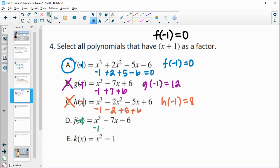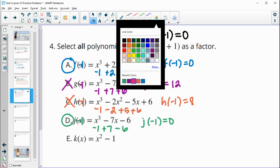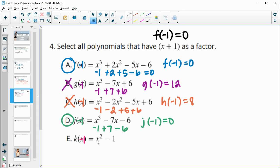So then we'll do j of negative 1. Negative 1 cubed is negative 1. Negative 7 times negative 1 is positive 7. And then we have minus 6. So j of negative 1, if we add those together, is 0. So it is a factor here. And then finally for k, negative 1 squared is 1 minus 1. So k of negative 1 is 0. So it is a factor for E.